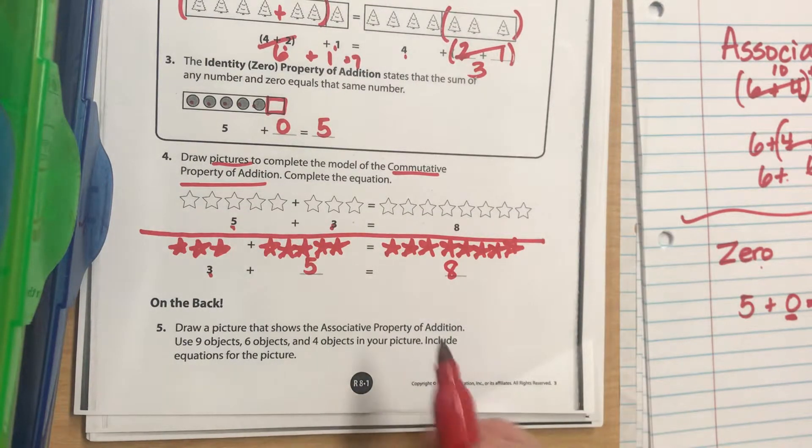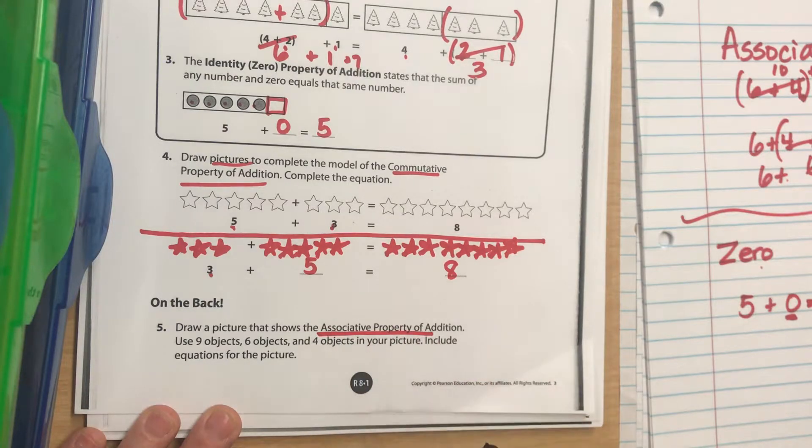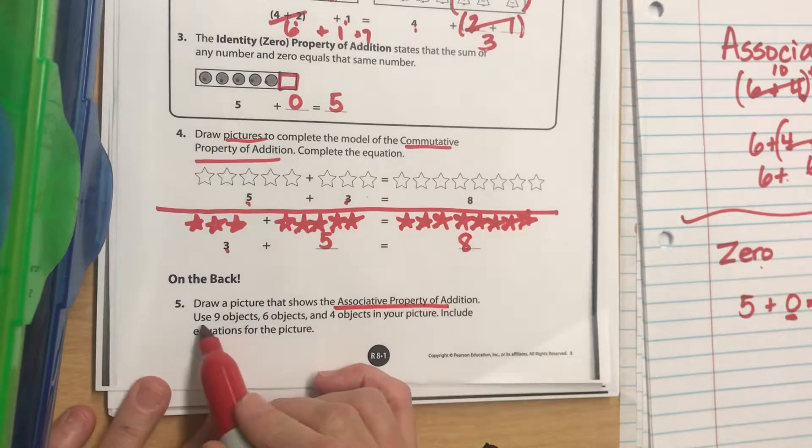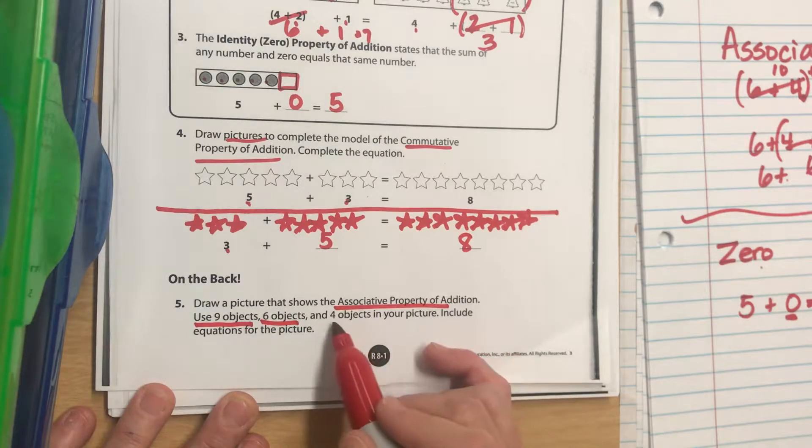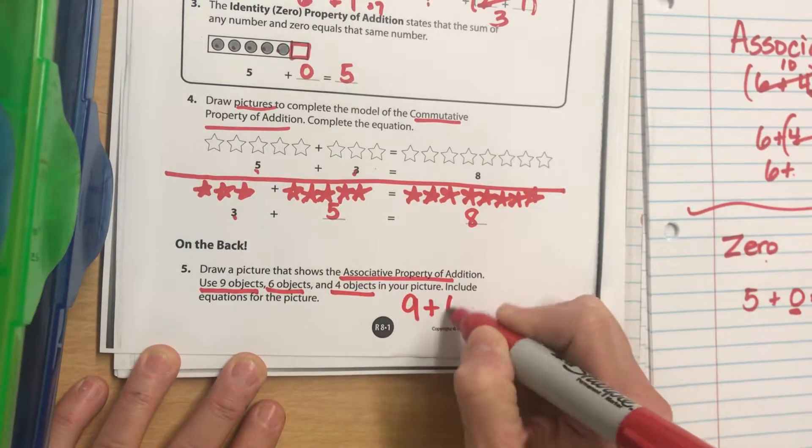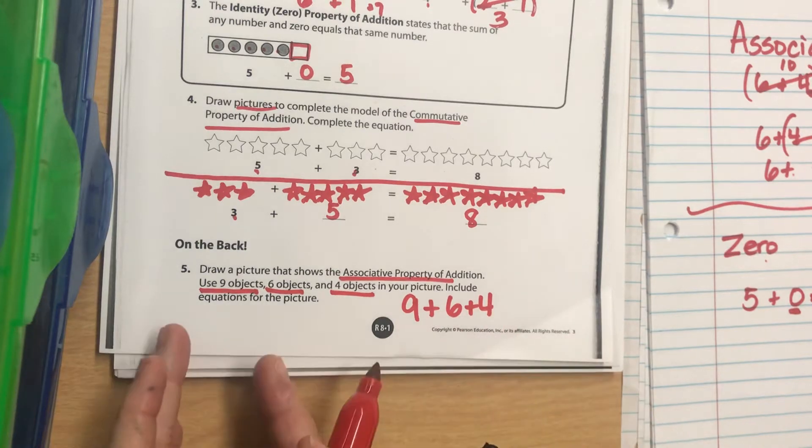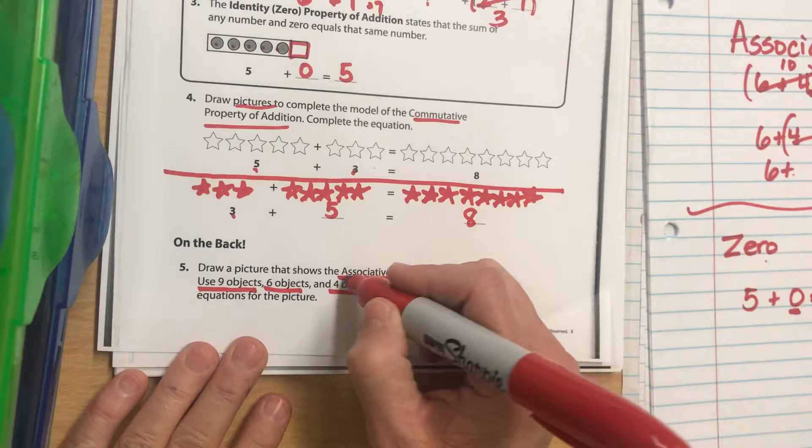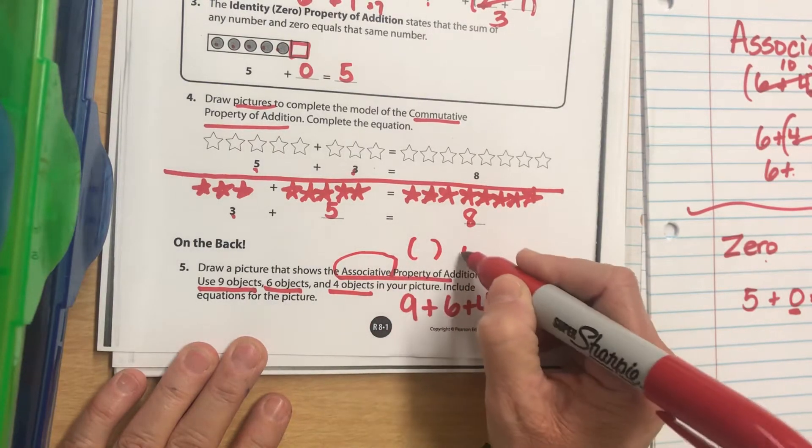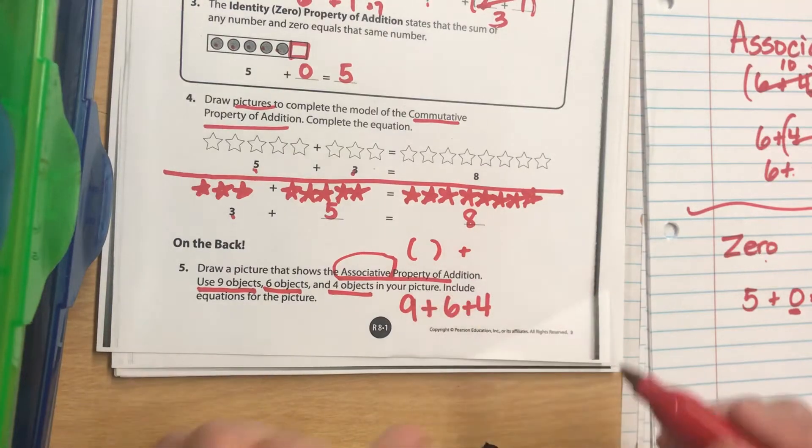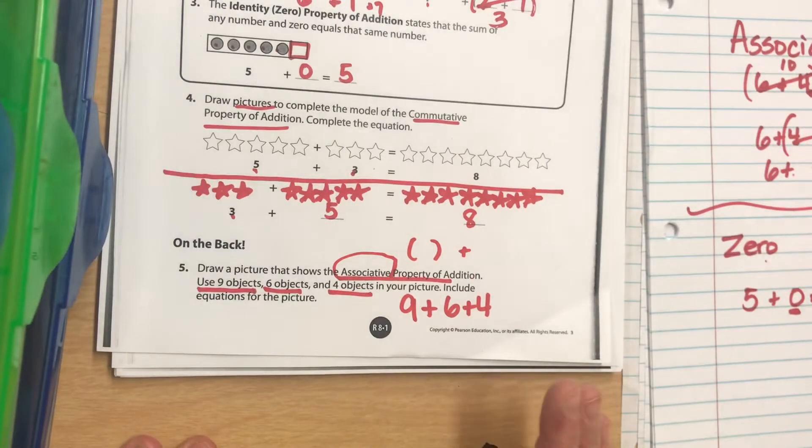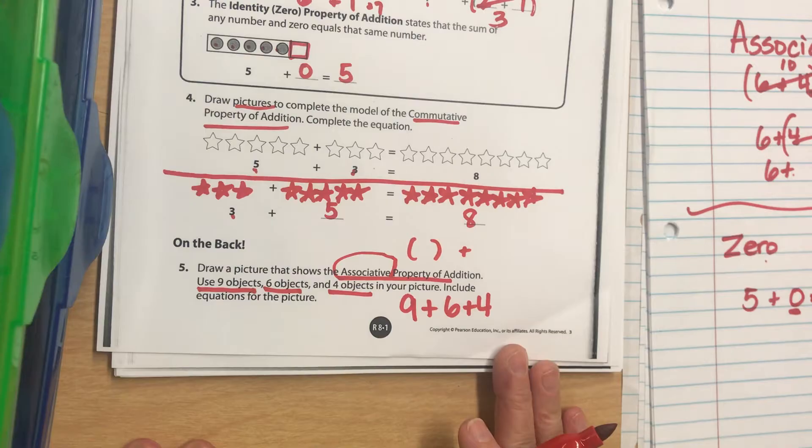Draw a picture that shows the associative property of addition. They want you to use 9 objects, 6 objects, and 4 objects, so it's going to be 9 plus 6 plus 4. You need to do it on the back, and it doesn't matter if you use stars or boats or smiley faces - whatever you want to use. Associative means you're going to group them differently. Put two of them in parentheses, and then put a different two in parentheses, and make sure you get the same answer. Do it on the back, and I will see you tomorrow. Good job.